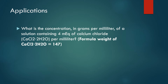The next example: what is the concentration in grams per milliliter of a solution containing four milliequivalents of calcium chloride per milliliter? We need to calculate the concentration in grams per milliliter. We have milliequivalents equal to four per milliliter, and the molecular weight for the total formula is 147. For calcium chloride, the small n equals two.